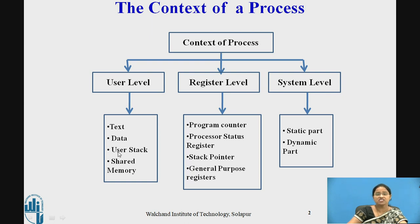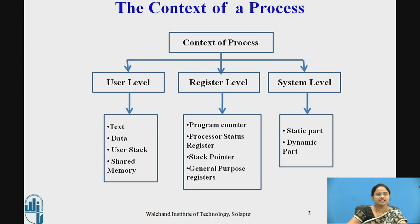Text, data, and stack are different regions of the process where text contains some set of instructions, while data contains the variables used in the program. User stack is related with the process whenever that process is executing in user mode. Some part of the memory may be shared among multiple processes, and that is also part of user level context.